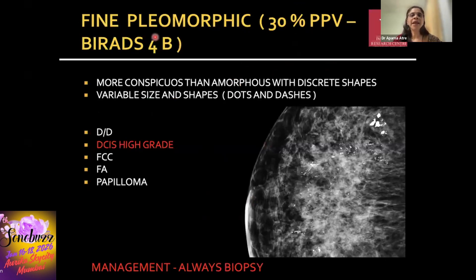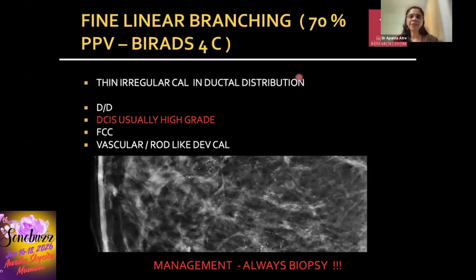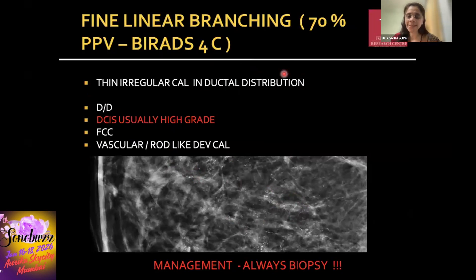Fine pleomorphic calcifications have a positive predictive value of greater than 30 percent and are BI-RADS 4B. They are slightly more conspicuous than amorphous, slightly smaller than coarse heterogeneous, and have variable shapes and sizes — dots and dashes. The primary diagnosis to exclude is high-grade DCIS, though fibroadenomas and papillomas are also differentials; management is always biopsy. Fine linear branching calcifications are thin, irregular, and in a ductal distribution with a positive predictive value of 70 percent, straightaway BI-RADS 4C, and we proceed directly to biopsy.